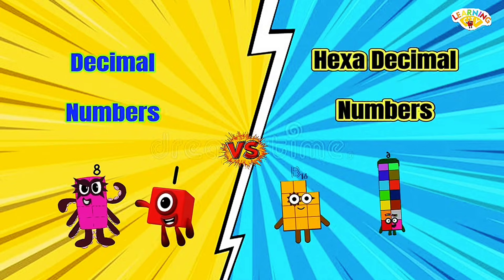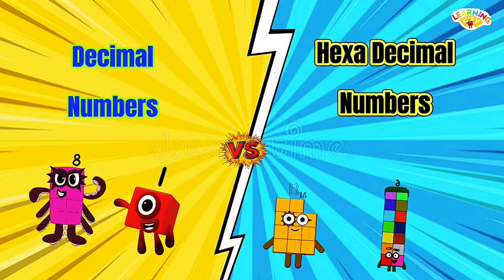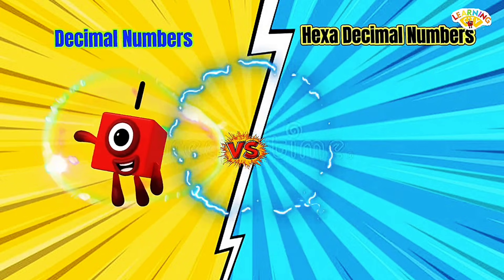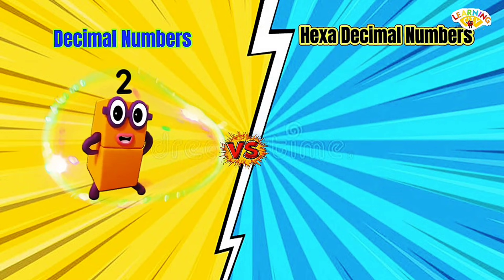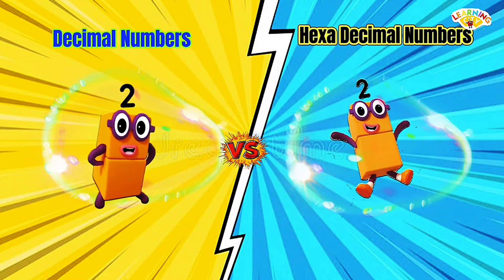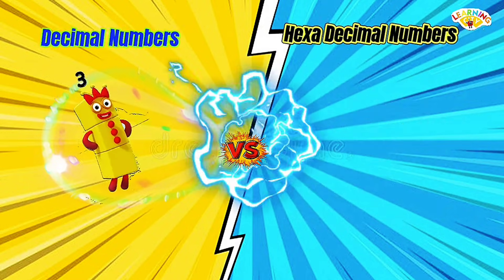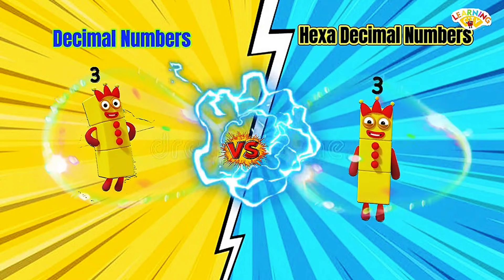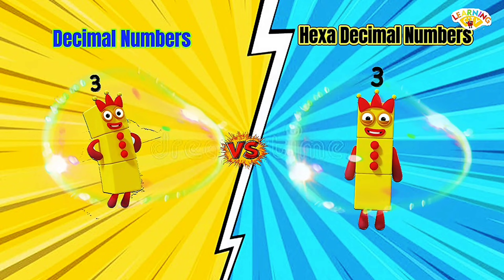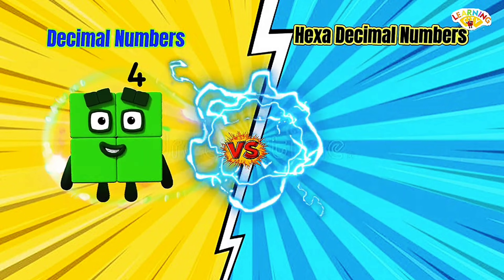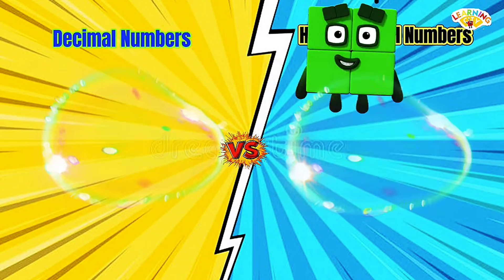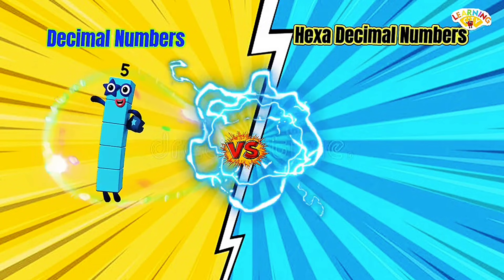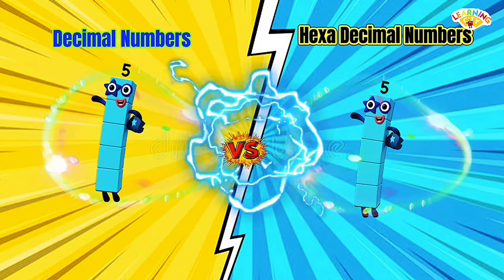Decimal Numbers Versus Hexadecimal Numbers. 1 equals 1, 2 equals 2, 3 equals 3, 4 equals 4, 5 equals 5.